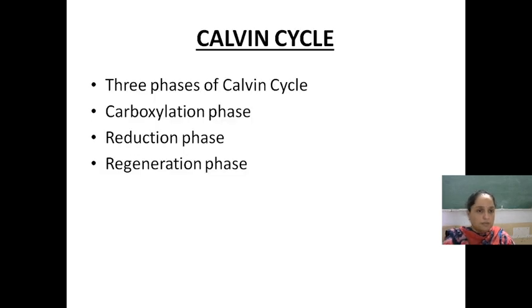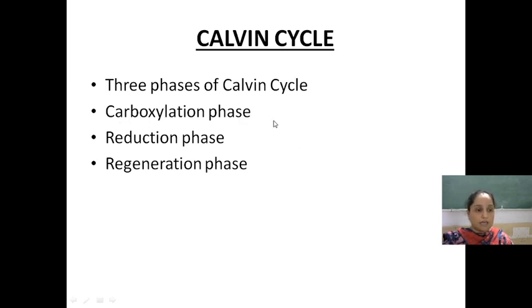The Calvin cycle has basically three phases: Carboxylation, Reduction, and Regeneration.